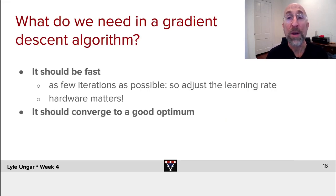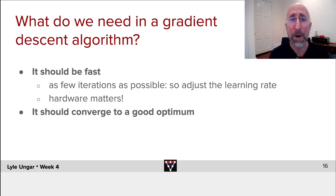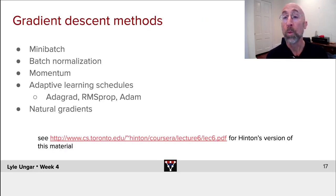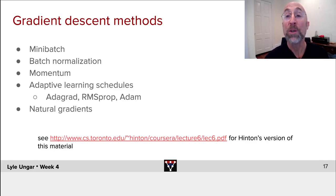What are we looking for in a gradient descent algorithm? We want something that's fast — not just in number of multiplications but in actual compute time on the computer. We'll also see next week that different gradient descent algorithms converge to different optima, so we'd like it to converge to a good optimum, not just reach one quickly. We will cover a whole bunch of different gradient descent methods this week.